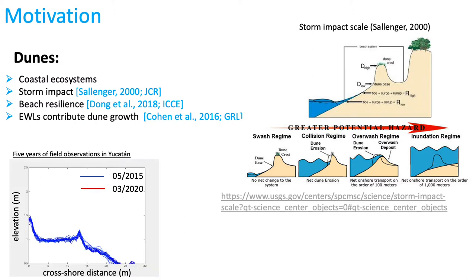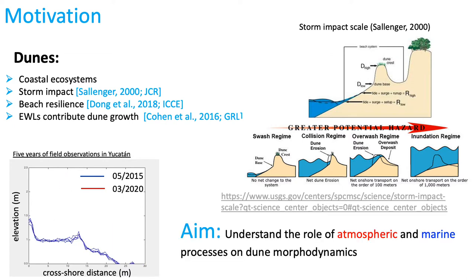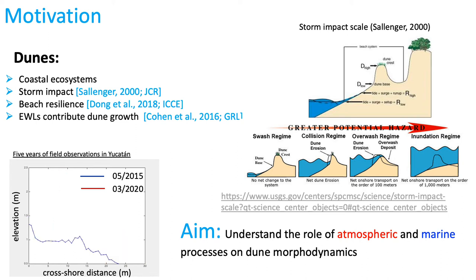Five-year morphological evolution data, in which foredunes were not present at the beginning of the study period, can be analyzed to investigate dune formation and growth. The purpose of the present study is to investigate the role of aeolian and marine processes on the dune morphodynamics by means of high-resolution beach surveys.